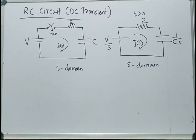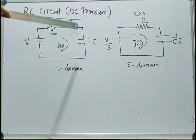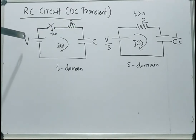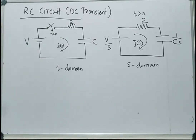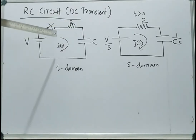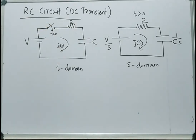In this section, let's discuss DC transient in an RC circuit. For that, let's consider an RC series circuit excited by a DC voltage source V. At T equal to zero, this switch is getting closed. Under that condition, current I(T) will flow through the circuit. Assume for simplicity initial capacitor voltage is zero. This is the time domain circuit, which we need to convert into the S domain in order to make the analysis.